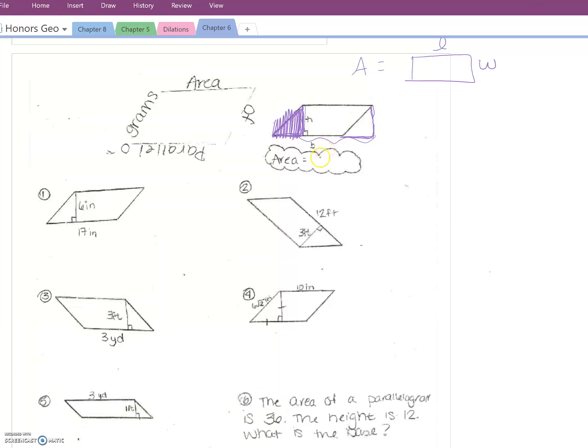So the area of a parallelogram is B times H, where the B is the base and the H is the height. Remember the height and the base must make a right angle; they have to be perpendicular to each other.